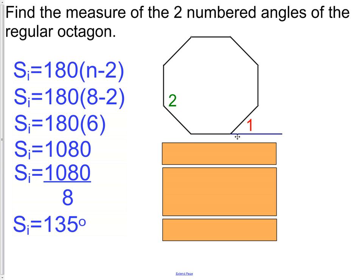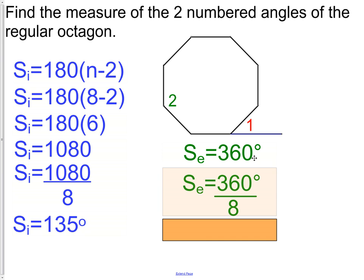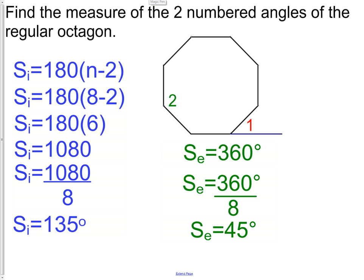For angle 1, the exterior angle: since all convex polygon exterior angles sum to 360, and it's a regular octagon, we divide 360 by 8 to get 45 degrees. As a check, the interior and exterior angles form a linear pair and must add to 180 degrees. We have 135 + 45 = 180, which confirms our calculations are correct.